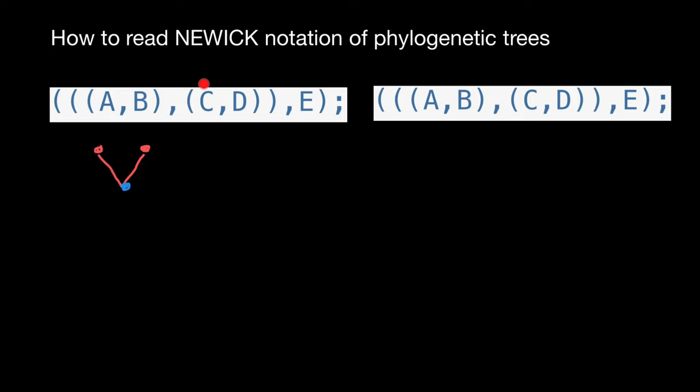Here we have other species C and D, so let's also put C and D. Again, this is two sister taxa, and the comma stands for the recent common ancestor. As you see, between these two monophyletic groups we have a comma, which means that these two monophyletic groups have a common ancestor.